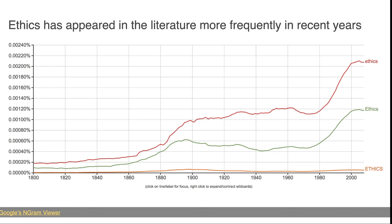This is the Google Ngram Viewer — a really great tool you can click and play with yourself. You give the Ngram Viewer a word, it goes through Google's database of scanned books, and looks for the incidence of that word over the years. You can see that 'ethics' is something that is appearing more and more frequently in recent years. It can be fun to play with that for other things too.